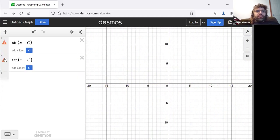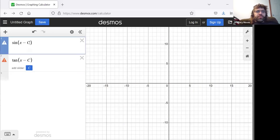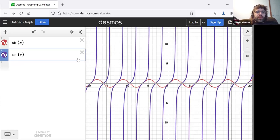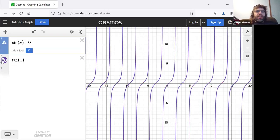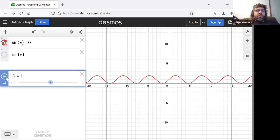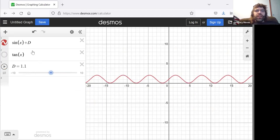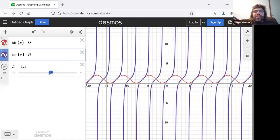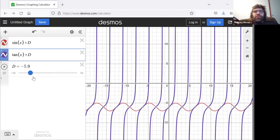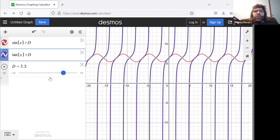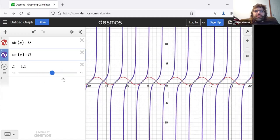Finally, with the sine, if we put a plus d there, that d causes the sine graph to move up and down vertically. And I'm afraid there's no extra credit in telling me ahead of time what's going to happen to the tangent when I put the d there. It's exactly the same thing. It moves up and down vertically.